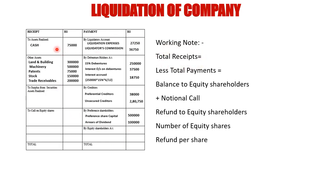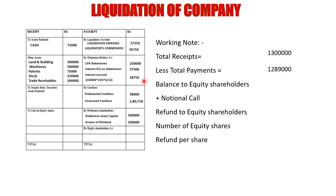In the working note, total receipts equal total other assets plus cash, which came to 13 lakhs. Less total payments — add up all the credit side amounts. In this case, the total payments come to 12,89,000. So the balance left for equity shareholders is 13,00,000 minus 12,89,000 = 11,000.